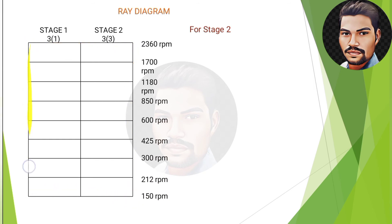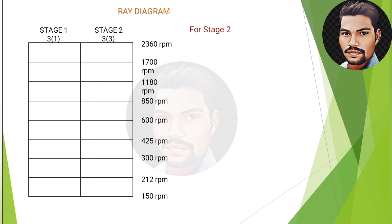Now the next step is the ray diagram. There are three shafts and two stages where gear meshing takes place. Nine lines represent the nine speeds. From the structural formula 3(1) × 3(3): at stage 1, one input is split into three different speeds; at stage 2, each of those three speeds is split into three more — giving nine total. The numbers in brackets indicate that at stage 2, speeds are represented at intervals of three.